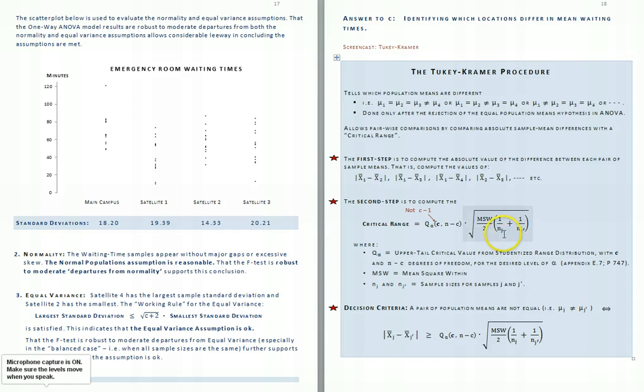In computing this quantity, we'll have to put in here also the number of observations there is in the jth sample, and here the number of observations there are in the j prime sample, thinking in terms of maybe the j sample as being the first sample and the j prime sample being the second sample, or whatever combination of samples we're computing the difference for.